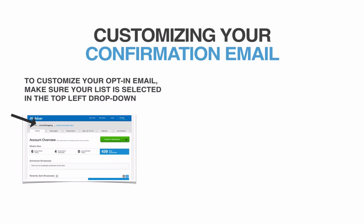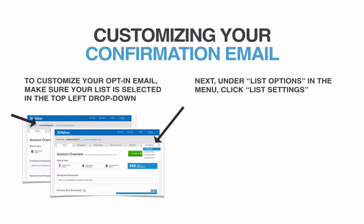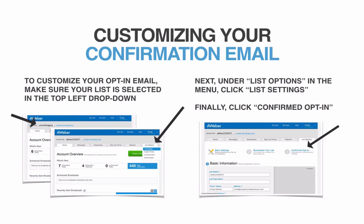Here's how to customize it. Open up your AWeber account — that's what it looks like on the left, it should be familiar. At the top is where you select your list. Select the list you want to customize the confirmation email for, because every list has its own confirmation email. Then see those tabs at the top? Go all the way to the right under List Options, click that tab, then click List Settings. That brings you to another page with three options at the top — click number three, Confirmed Opt-in.